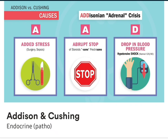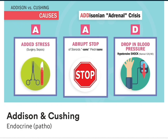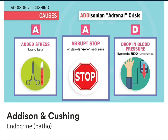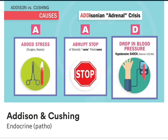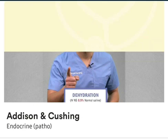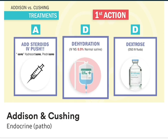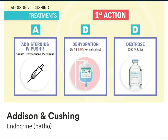Think ADD for Addisonian or adrenal crisis. A for added stress like a broken leg or car accident — or if Addison's disease patients go into surgery and don't increase their dose. The second A is for abrupt stop — patients forget to take their prednisone steroids or go on vacation and don't refill their prescription. And boom — Addisonian crisis. This leads to low blood pressure, which is shock and then death. So what's your first priority action as the nurse? Our first priority is to get that blood pressure up. Our very first nursing action is to add -zone steroids — IV push. Hydrocortisone or prednisone, IV push — that's the NCLEX number one for Addisonian adrenal crisis. After, we can always treat the low fluids and low sugar with IV normal saline and even dextrose IV solution.